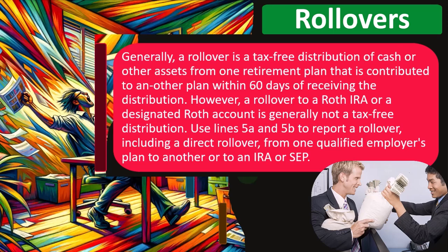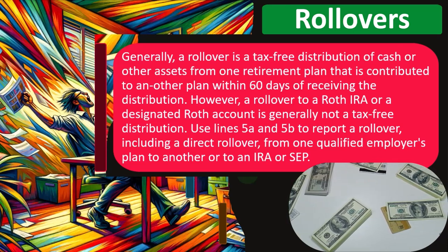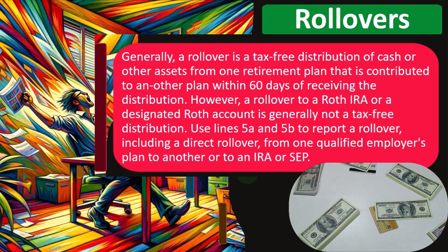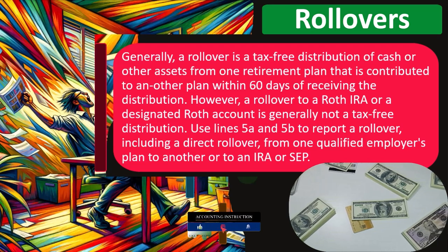However, a rollover to a Roth IRA or a designated Roth account is generally not a tax-free distribution. The general idea would be that if you have money in investment accounts such as mutual funds but they're under the umbrella of a retirement account — meaning you got tax benefits on it — then you can't just take the money. You want to make sure you don't take the money out and be subject to penalties and interest, receiving a 1099-R with a distribution code that triggers penalties.